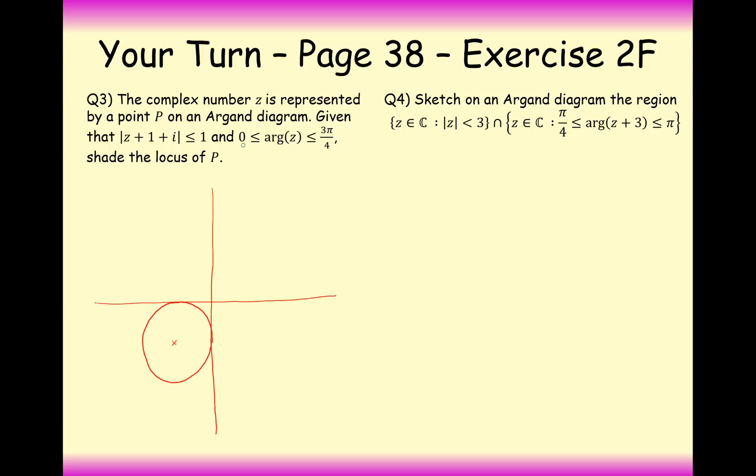And for this coordinate here, it's going to start at zero and go round to three pi by four. So it looks like we haven't got any intersection points there.